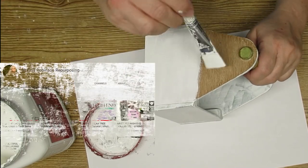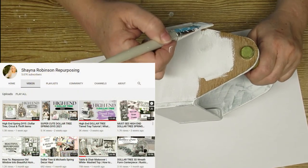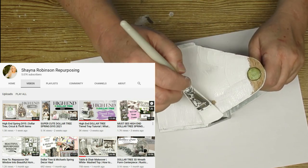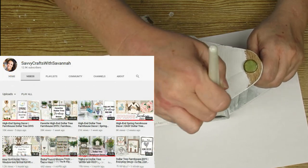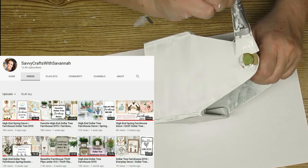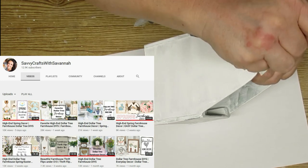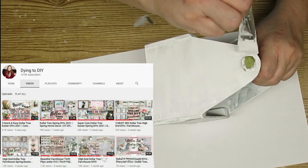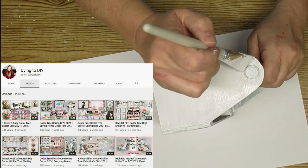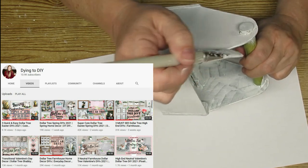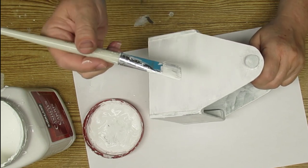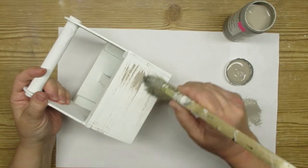Today's video is part of Thrift Flip Thursday which is hosted on the second Thursday of every month by Shana Robinson Repurposing and Savvy Crafts with Savannah. They have a guest host this month, Camaro from Dying to DIY. You've got to go check out all of these ladies' channels. They do some amazing home decor items, thrift flips, Dollar Tree DIYs. Please make sure you subscribe to their channels and tell them I sent you.